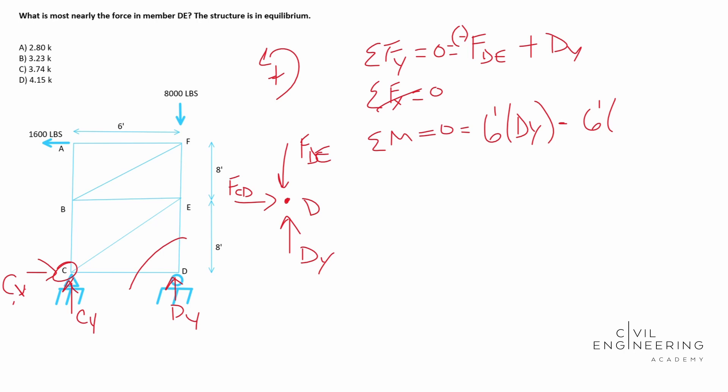You have six feet times 8,000 pounds and make sure that you write down your units. So it's a big deal because ultimately we can look at our answers here and they're in kips. So we know that our units are going to be very valuable to us towards the end. So now we're back in the positive here and we have 16 feet times 1600 pounds. Okay. So go ahead and solve for D_Y there.